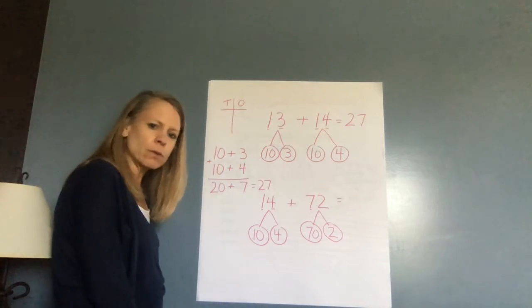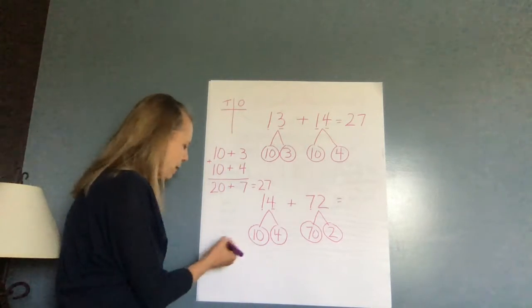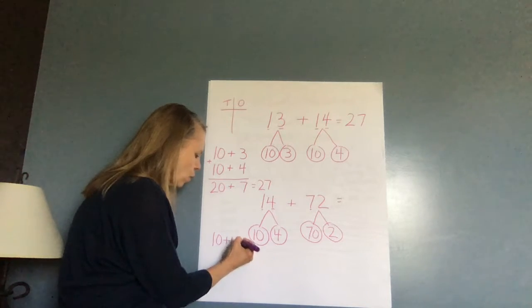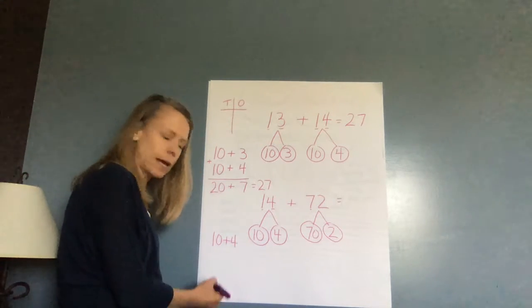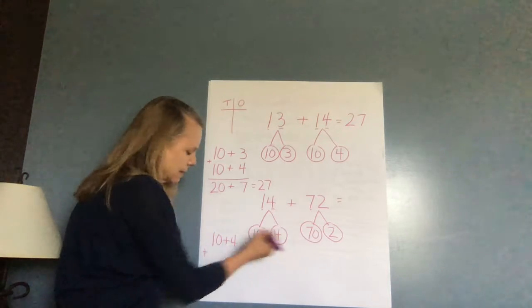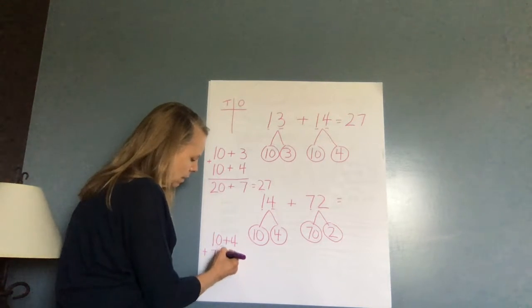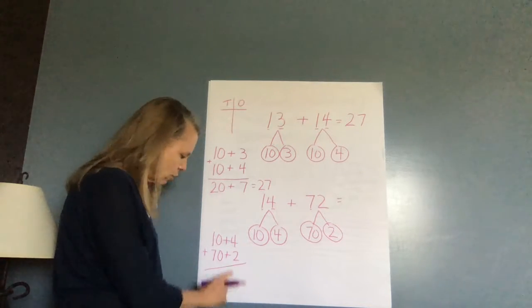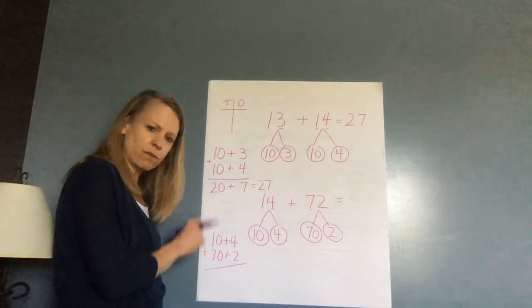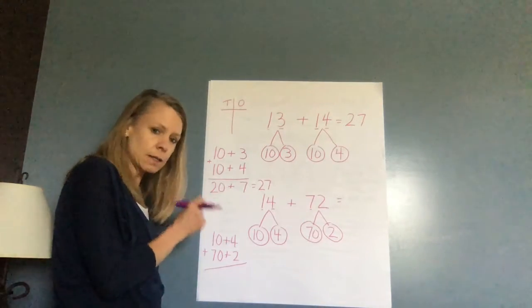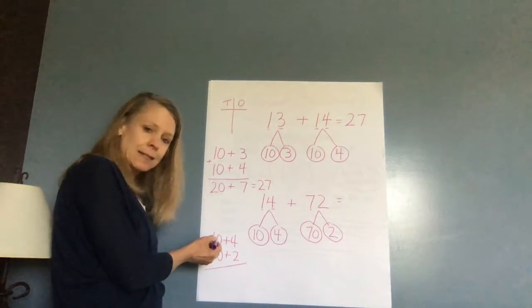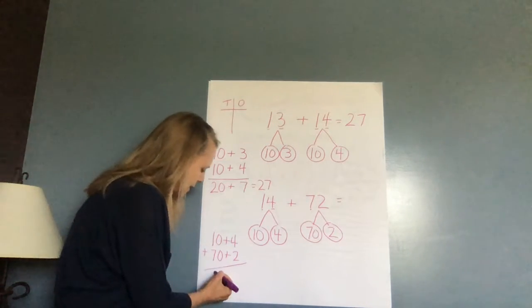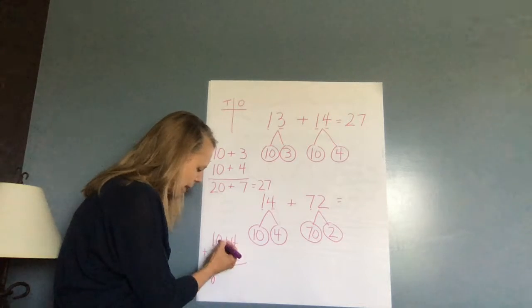So now I'm going to add those two numbers together. So I'm going to say I have 10 plus four. And then underneath of it, I'm going to put my plus, 70 plus two. Draw my line underneath. So now I'm going to do the tens first. Remember, the tens first. And I'm going to say 10 plus 70. So I'm going to say one plus seven is eight, and I'm going to bring my zero down.